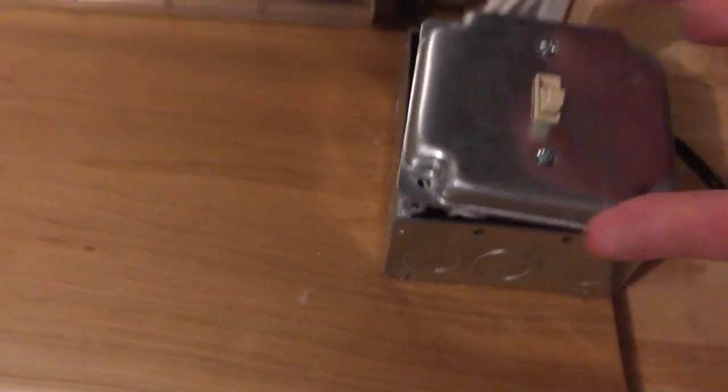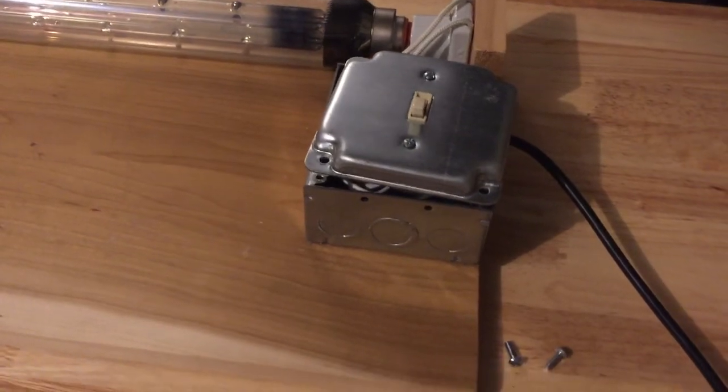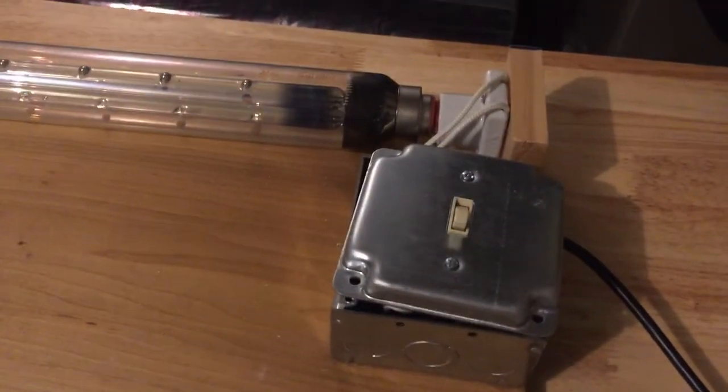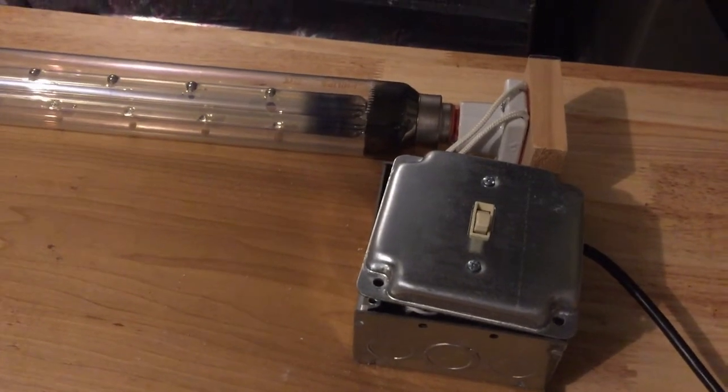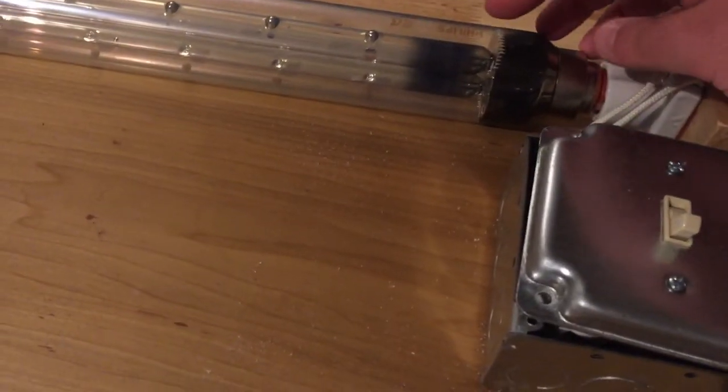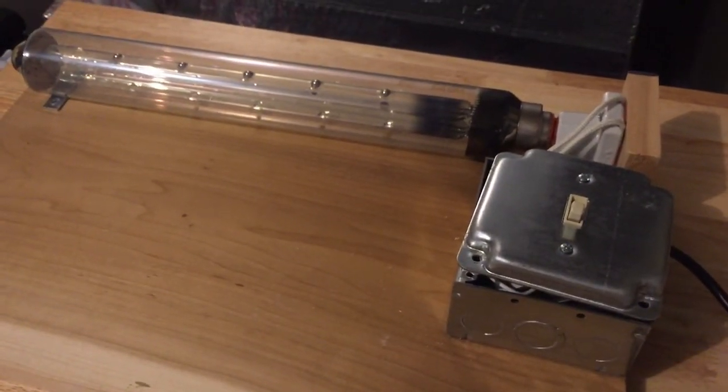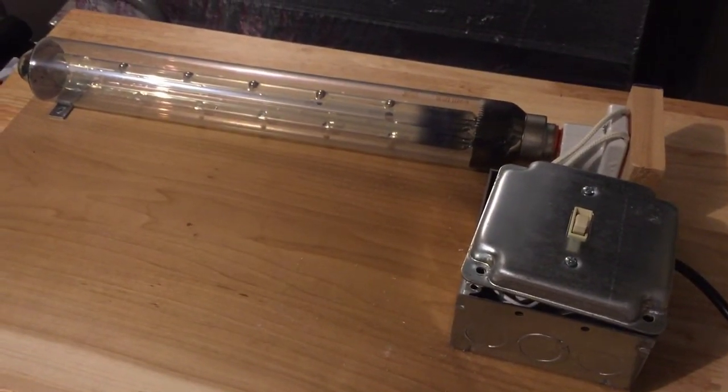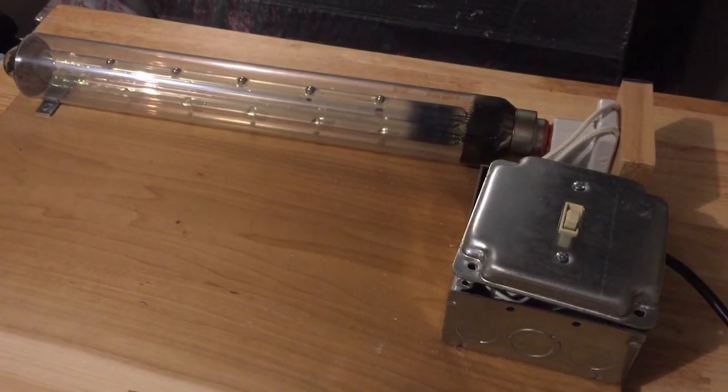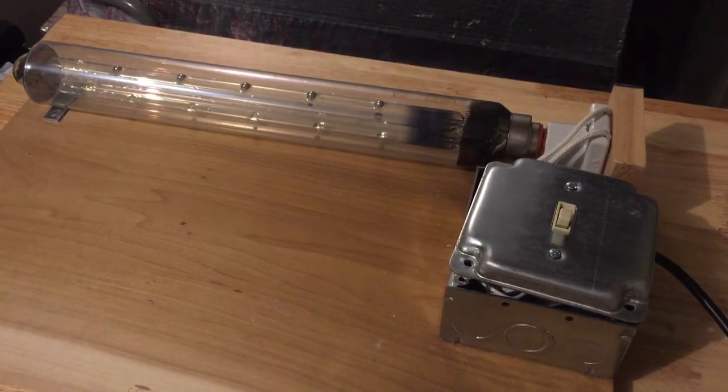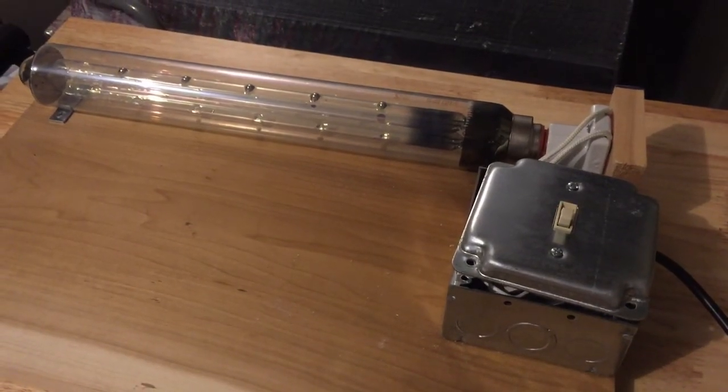The purpose of the ballast is to take electricity from a 120-volt AC receptacle and increase the voltage significantly so that the electrodes, which are here and down here in the bulb, can drive current through the gas that is inside the bulb. If you give me a moment, I'll get the junction box closed up again and get it set up to turn on so we can see what happens when we fire it up.